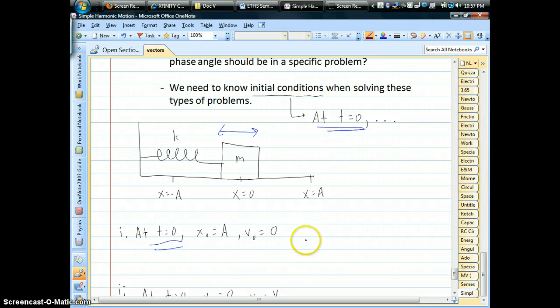So we have two choices. We could say that either x could be amplitude times cosine of omega t, or that it's amplitude times sine of omega t.